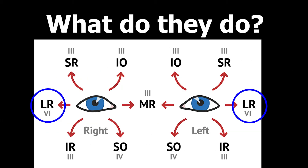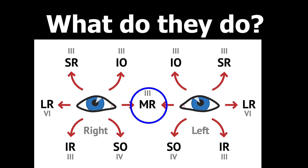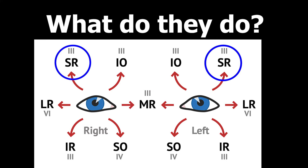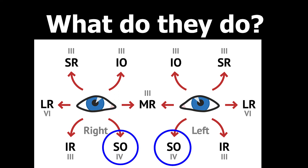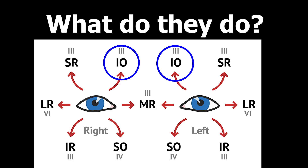For movement: the lateral rectus moves the eye laterally — abducting — and the medial rectus moves it medially — adducting. The superior rectus elevates the eye and the inferior rectus depresses it. The oblique muscles are a bit harder to remember because they're essentially the opposite: the superior oblique depresses the eye and the inferior oblique elevates it.